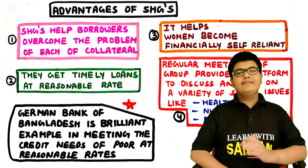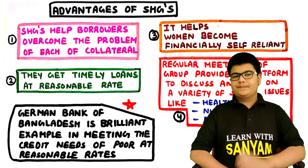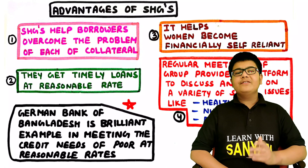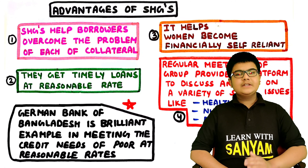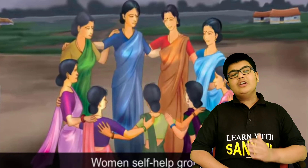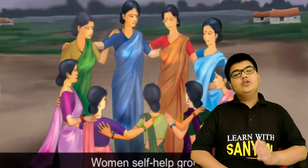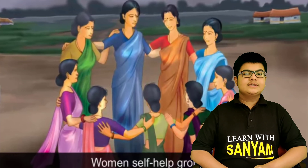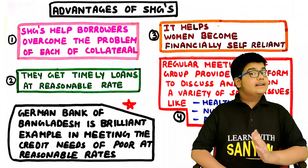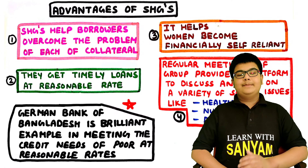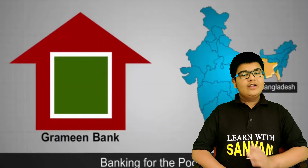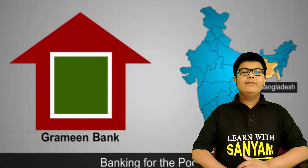Other advantages of self-help groups include: people are able to get timely loans at reasonable rates; it helps women become financially self-reliant; and regular meetings provide a platform to discuss social issues like health, nutrition, and domestic violence. The Grameen Bank of Bangladesh is a brilliant example of meeting the credit needs of poor people at reasonable rates, and is one of the key examples of self-help group models.